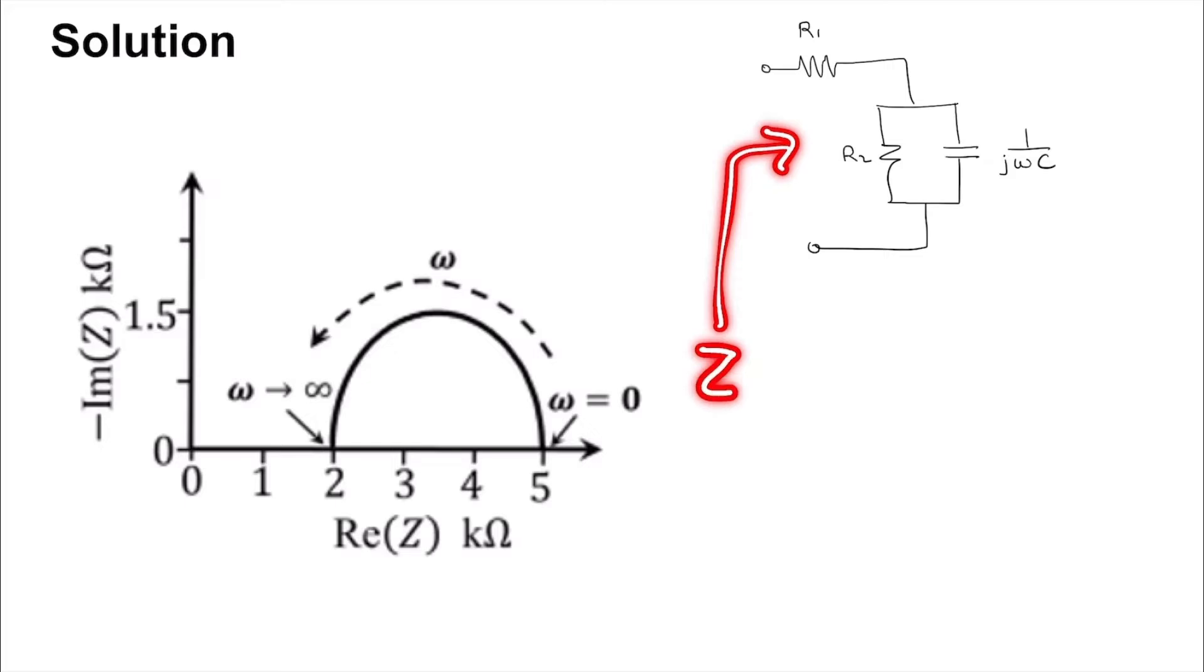We have the locus of its impedance, that is the impedance looking in as omega is taken from 0 to infinity. When omega equals 0, this is going to be an open circuit because you put 0 in the denominator so it becomes infinity.